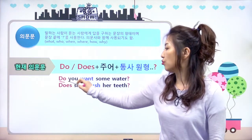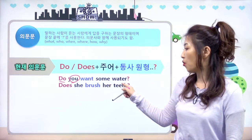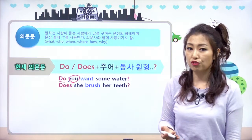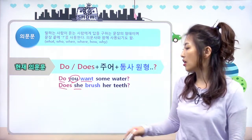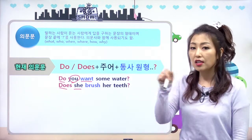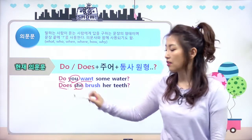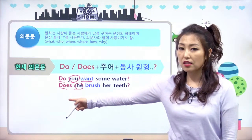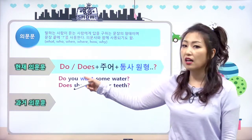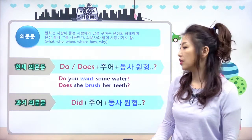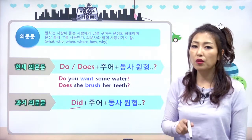'Do you want some water?' you가 2인칭이잖아요, 3인칭 단수 아니죠? 그래서 do를 쓰고, '너는 물 좀 줄까?' want는 동사 원형이에요. she가 나왔으니까 'Does she brush her teeth?' 그녀는 칫솔질을 해? she가 나왔으니까 does가 이렇게 나왔고요. 문장 시작은 반드시 대문자. 과거는 did로 해결하면 되겠죠? did + 주어 + 동사 원형 + question mark.